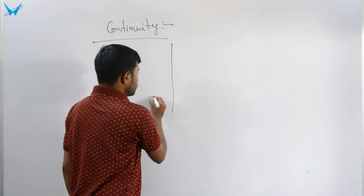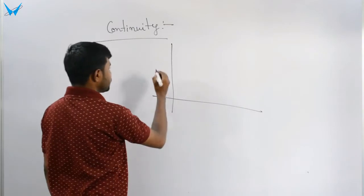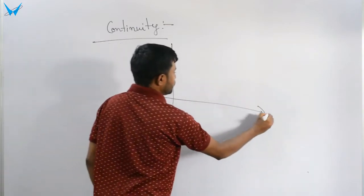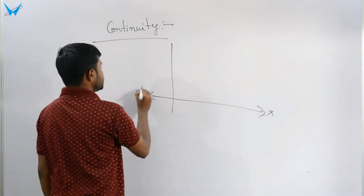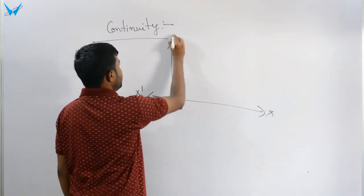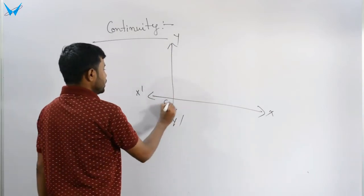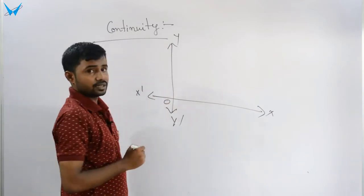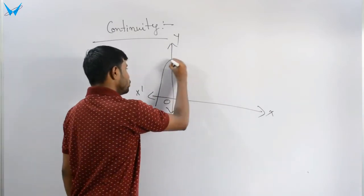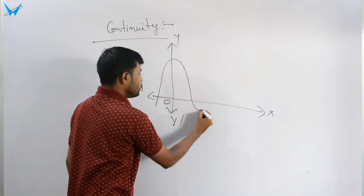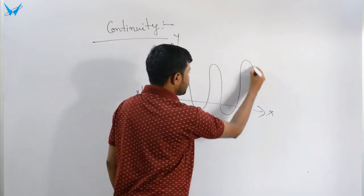Graphically, suppose I am using a graph with axes x, x-dash, y, y-dash. This is the origin. If the curve has a break, it is not continuous.